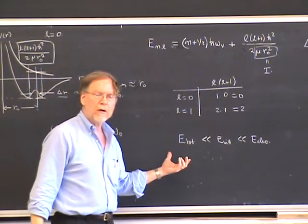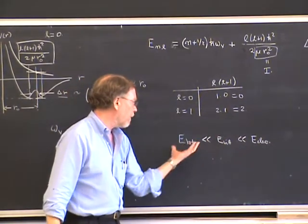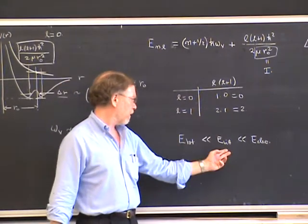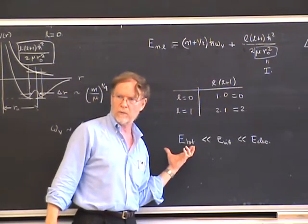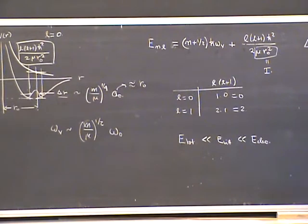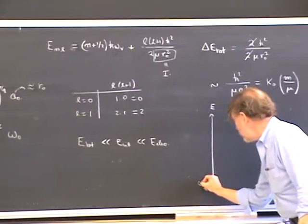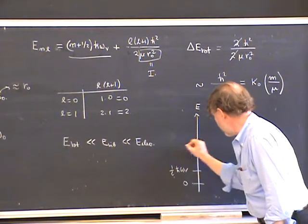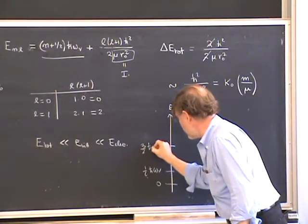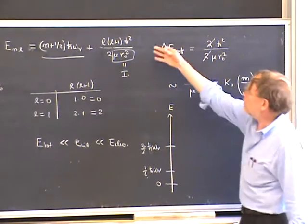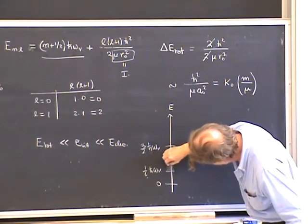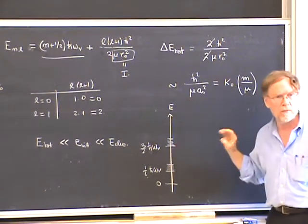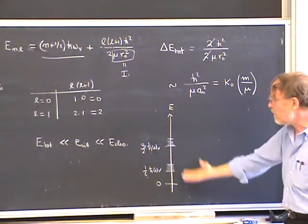There are three energy scales in the molecule: rotations, which are much less than the vibrational energy scales, which are much less than the electronic energy scales — typically a factor of 100 each. Photons corresponding to rotational transitions are down by about another factor of 100 compared to the vibrational energies, putting them in the far infrared or microwave regime. In an energy diagram, the vibrational energy levels are at one-half h-bar omega_v and three-halves h-bar omega_v and so on, and on top of these the rotational energies produce a fine structure of levels about 100 times smaller — this is a typical rho-vibrational spectrum of a molecule.